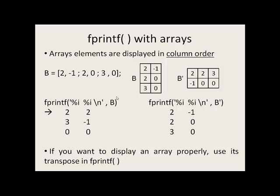We recycle %i, %i — continuing down the column, we get 3. We're done with this column, so we go up to the next column: negative one. So 3 and negative one are printed. We say \n, go to the next line, come to the end of the single quote, and we still have two more items in b to print off, so we go back to the beginning. %i, %i — the last two elements of b are printed off: 0 and 0.